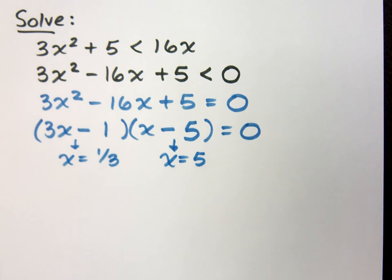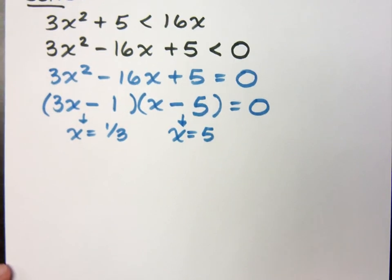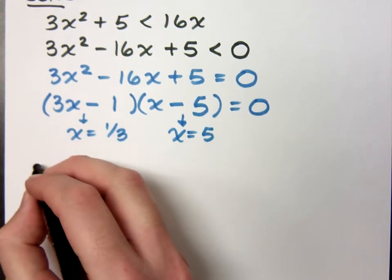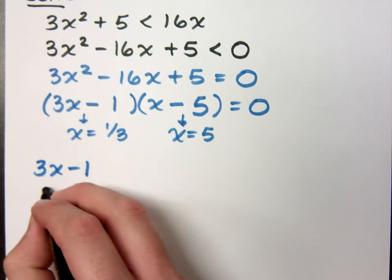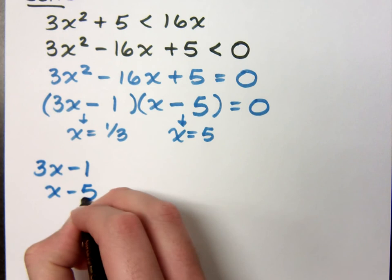But instead of doing test intervals, I want to show you something different. And this is all based on the signs. I'm not going to really be plugging in numbers. It's all about looking at the signs of your factors. So down one side of the page, I want to have the factors that I'm curious about: 3x - 1, x - 5.